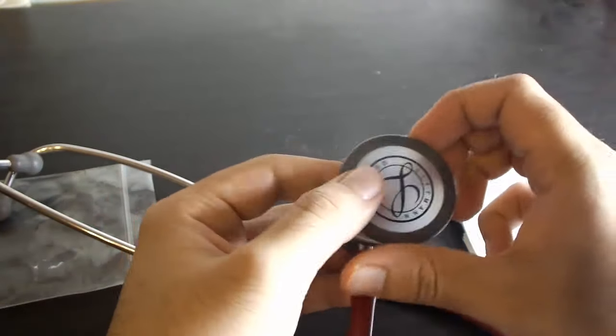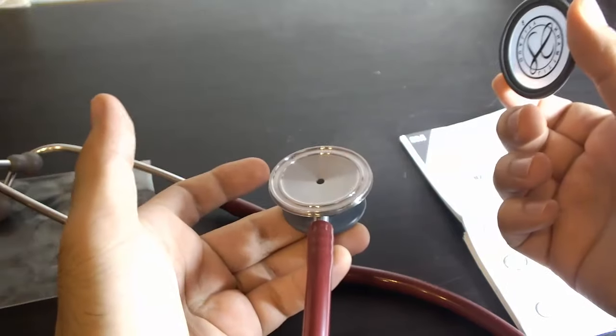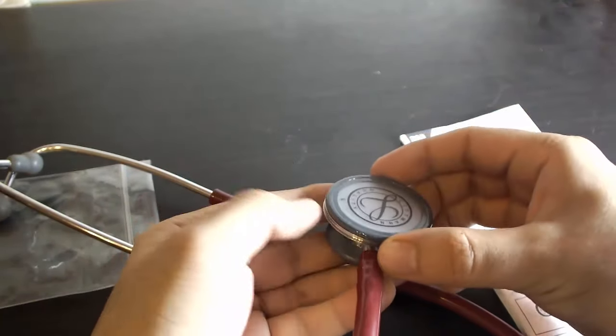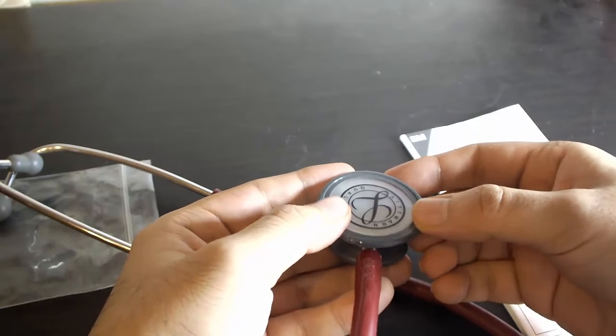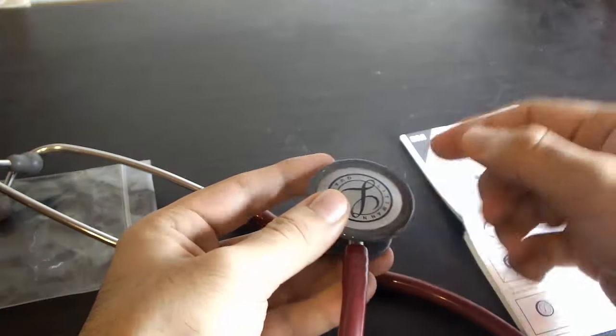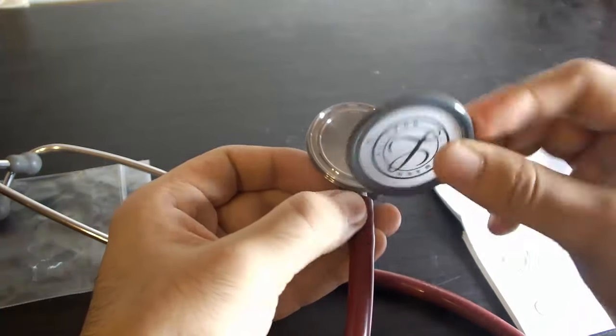The upper arm of the L should be in line with the tubing. Now just press one side of this diaphragm and rim assembly onto the chest piece.